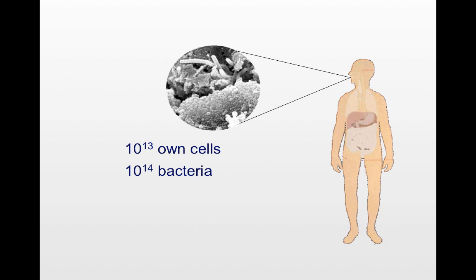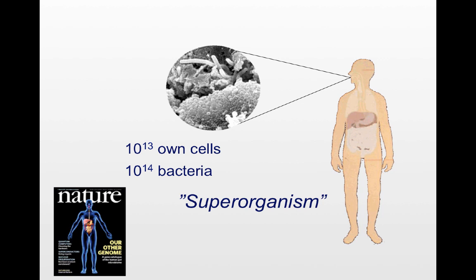It has been calculated that our own body consists of 10 to the 13th cells, whereas the number of bacteria that colonize our surfaces — that is the skin and our mucosal surfaces — add up to 10 times that number, that is 10 to the 14th bacteria. And here we are only talking about bacteria. There are other microorganisms that add to this complexity.